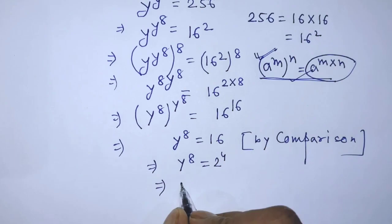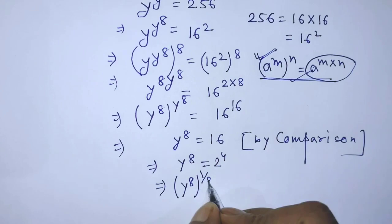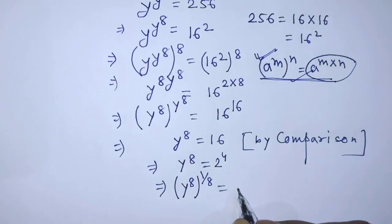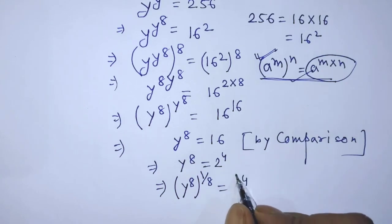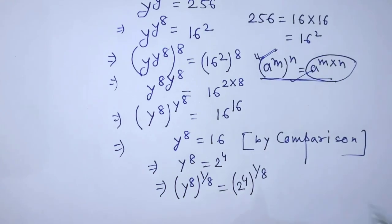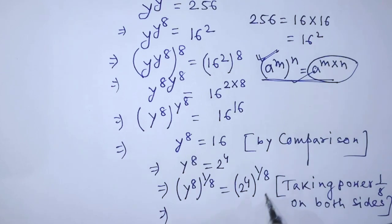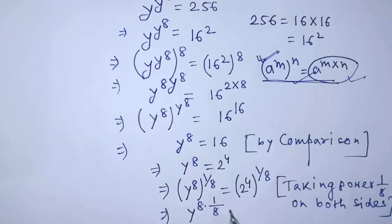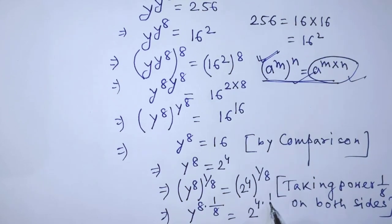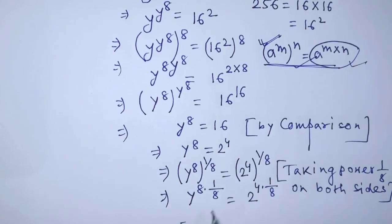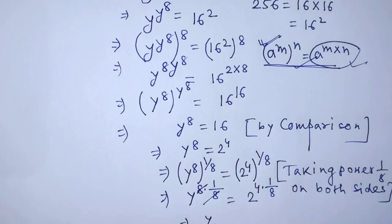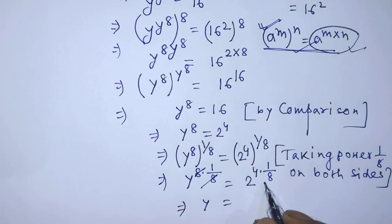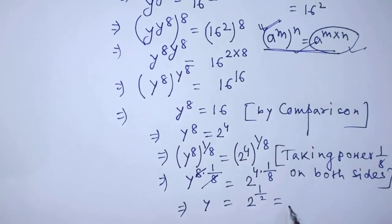We can write from the left hand side: y to the power 8, whole to the power 1 over 8, is equal to, on the right hand side, 2 to the power 4, whole times 1 over 8. Applying the formula, we get y to the power 8 times 1 over 8 is equal to 2 to the power 4 times 1 over 8. The 8s cancel and we get y is equal to 2 to the power half, that means the square root of 2.